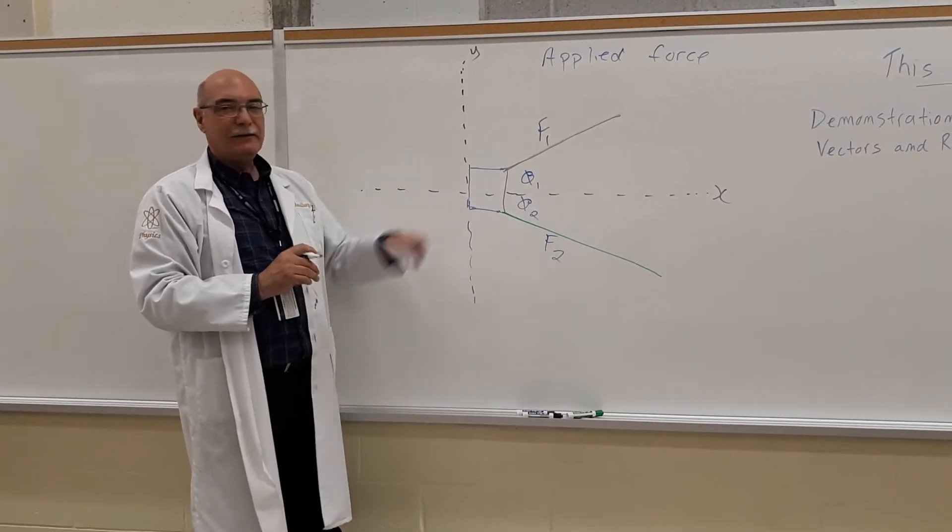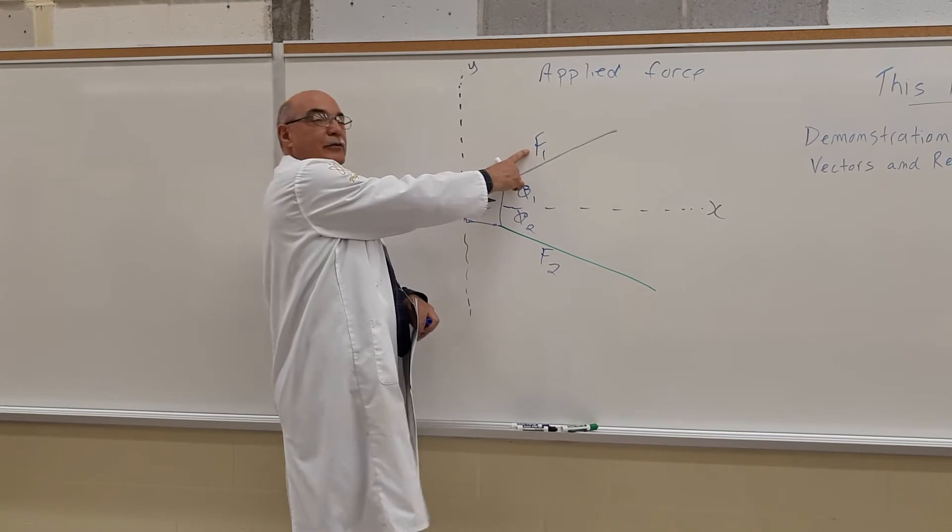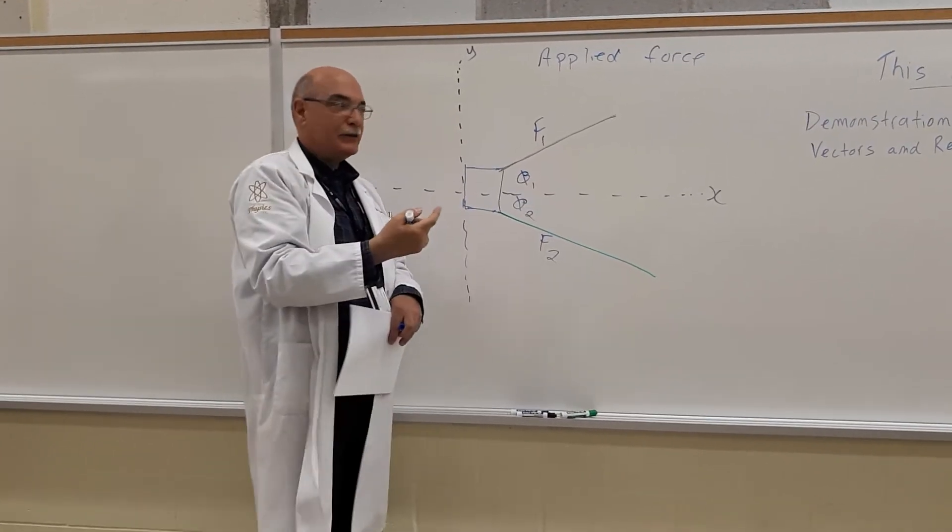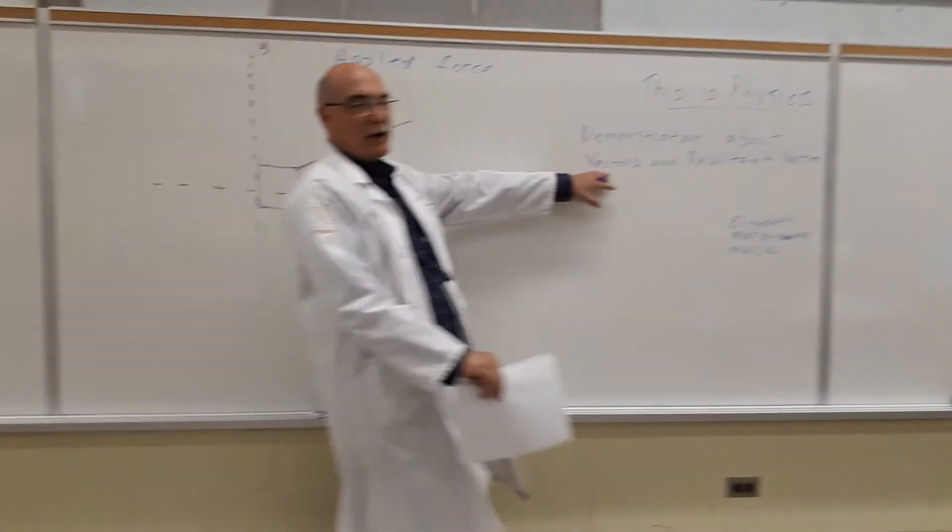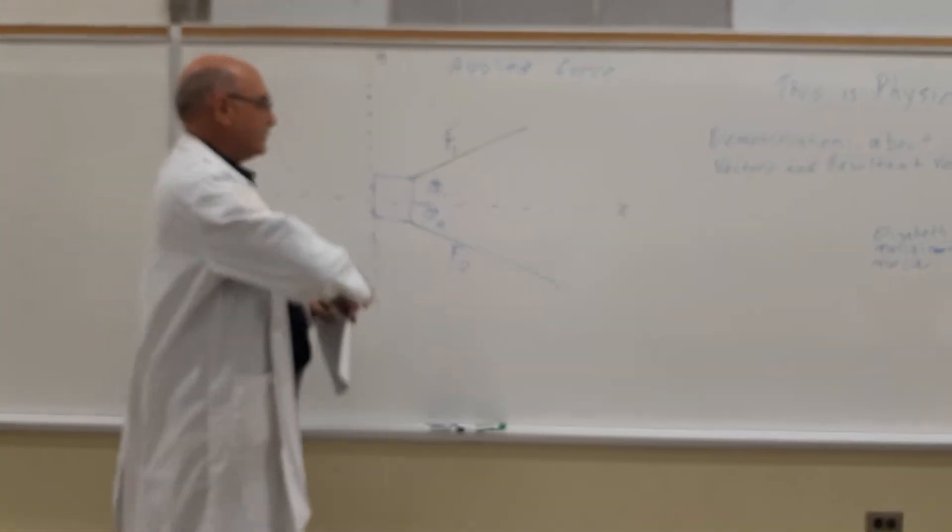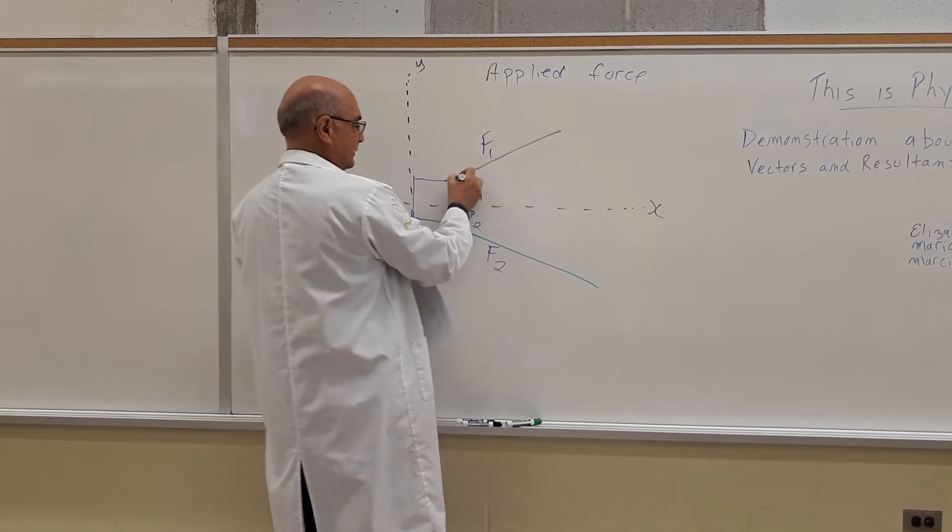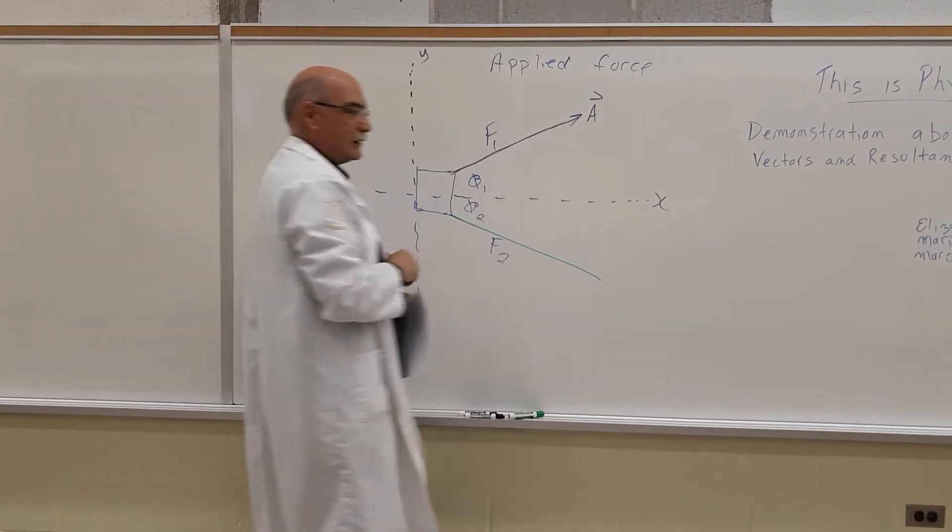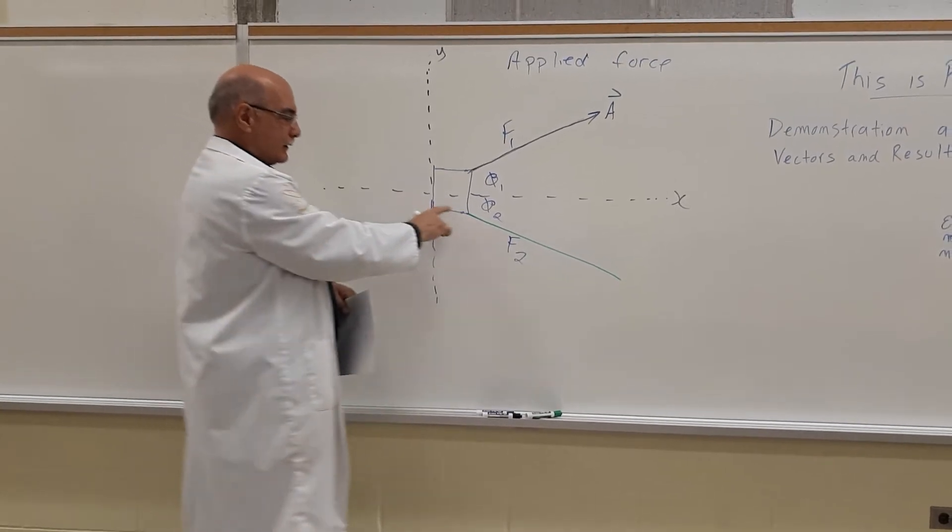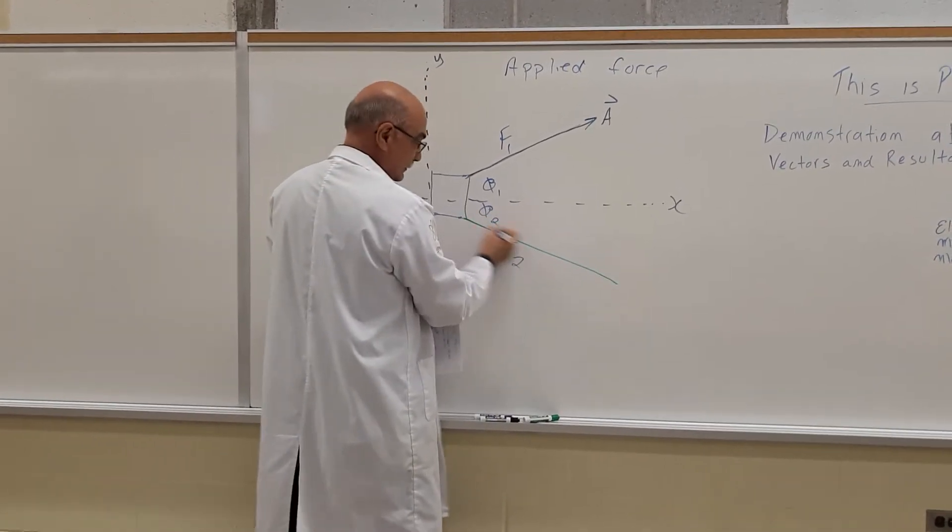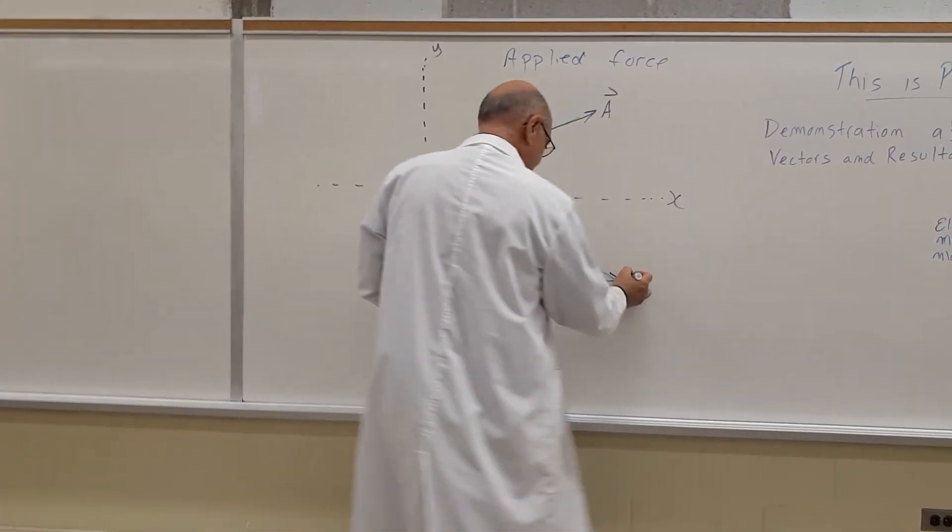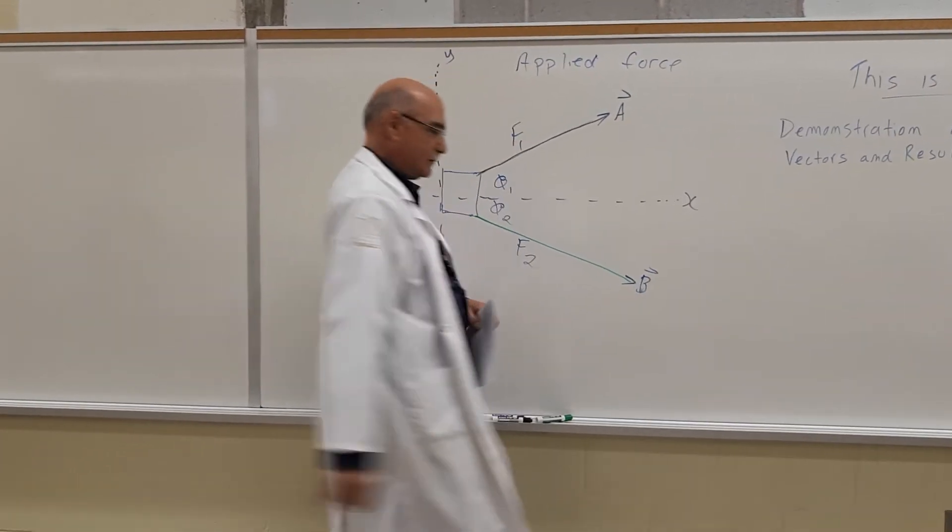Now these can be turned into vectors because we have a magnitude. Even though we don't have an actual measurement, it does have a magnitude. And we have an angle. And the definition of a vector is a magnitude with a direction. So this can be a force, or a vector. And we'll call that vector A. And the same thing applies to this one down here. This is a vector. And we'll call that vector B.